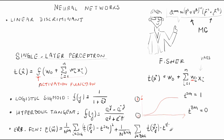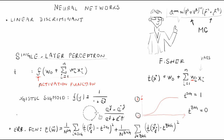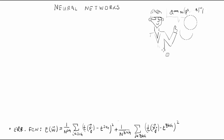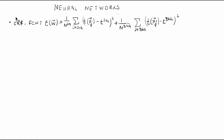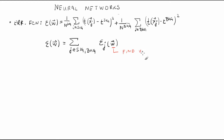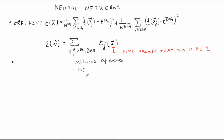The sums run over all Monte Carlo background and signal events respectively. In shorthand notation, E(w) = sum over all signal and background events of e_j(w). The neural network parameters w are those that minimize the error function. The minimization is not simple at all — the sums can involve millions of Monte Carlo events, and the error function might have several local minima.